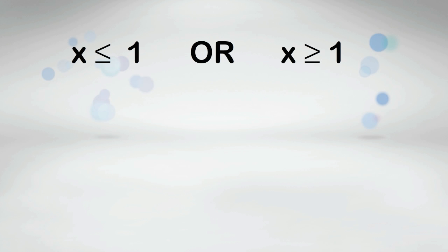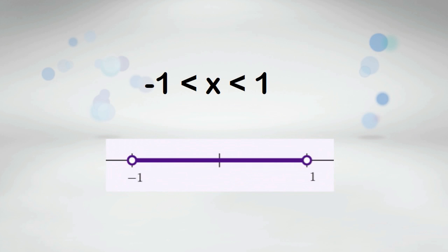If the inequality has OR, the graph will point in two different directions. If the variable is in the middle of two inequalities, the graph will be used between the two points.